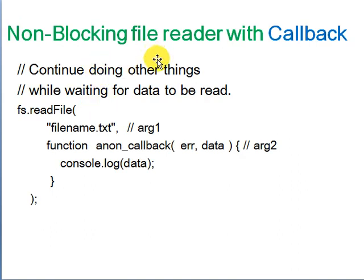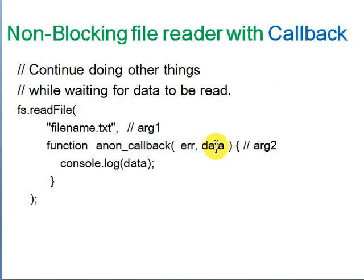For a non-blocking file reader with a callback: use 'fs.readFile(filename, function(error, data) {...})'. The second argument is an anonymous callback function called when the file is read. It takes two arguments: an error (if any) and the data returned. If there's no error, print the data; if there is an error, print a message. This function returns immediately — the main thread is not blocked.